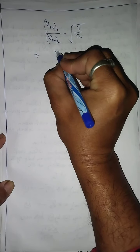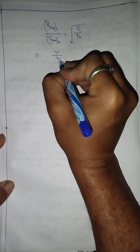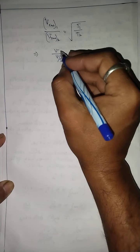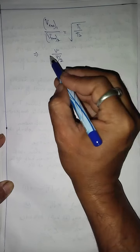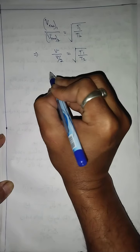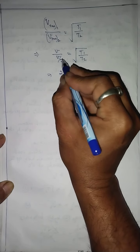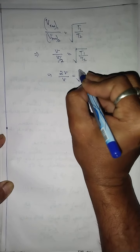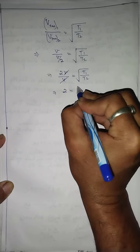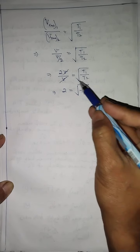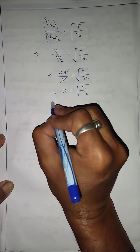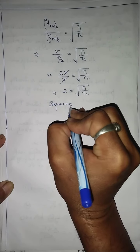Now substituting the values: v_rms1 = b and v_rms2 = b/2, so b divided by (b/2) = √(T1/T2). This simplifies — the 2 comes to the top — giving 2 = √(T1/T2). The b's cancel out. Now T2 is inside the square root, so to eliminate it we square both sides.